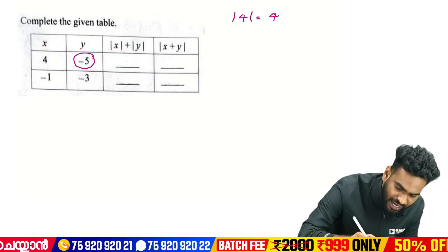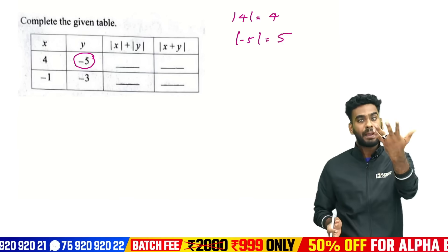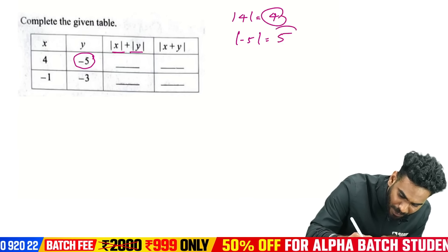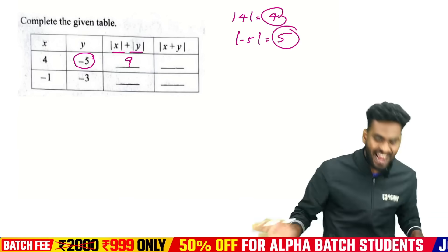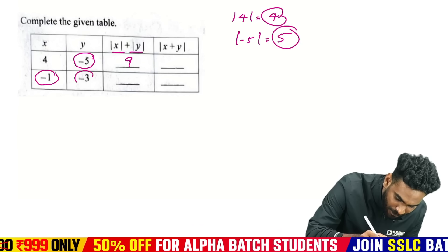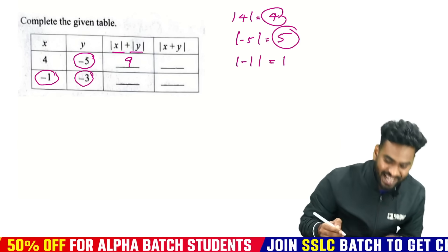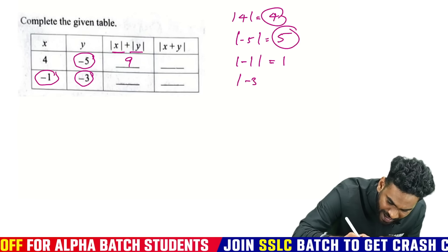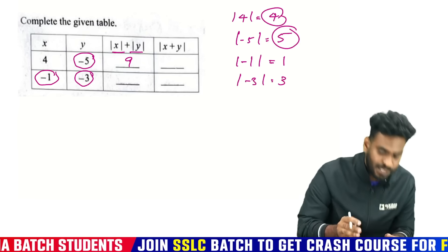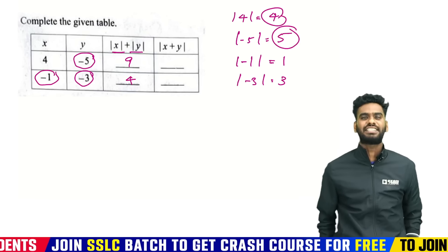And Y is minus 5. So mod of minus 5 is equal to plus 5. So mod X plus mod Y — that is the first answer. The second example: X is minus 1, Y is minus 3. Mod of minus 1 is 1, mod of minus 3 is 3. So mod X plus mod Y equals 1 plus 3, which equals 4.